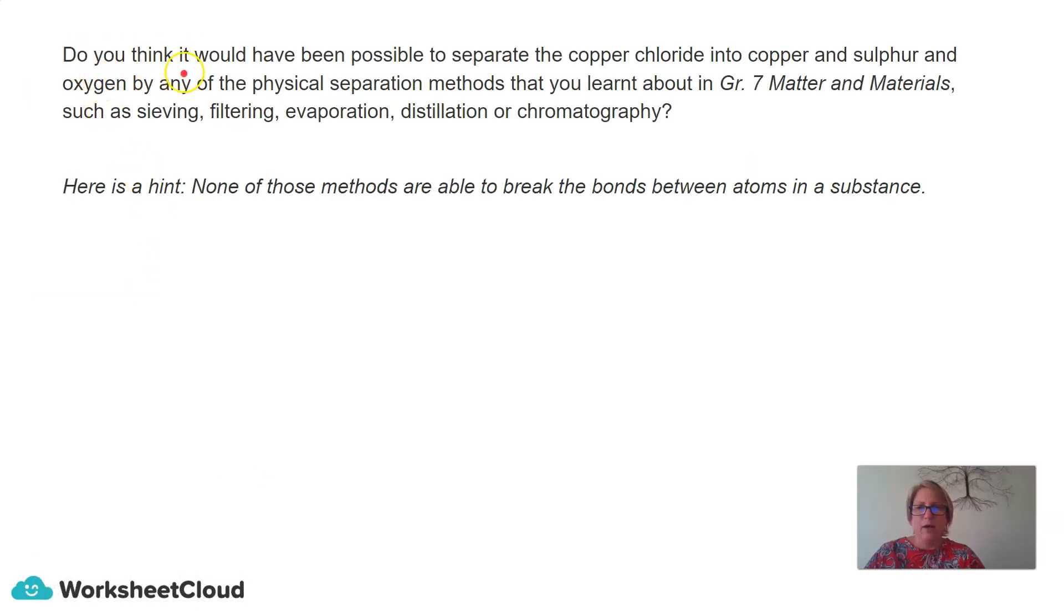Do you think it would have been possible to separate the copper sulfate into copper and sulfur and oxygen by any of the physical separation methods that you learned about in grade 7 matter and materials? So just to remind you, you would have looked at sieving, filtering, evaporation, distillation, or chromatography. So basically, here is a hint. None of those methods are able to break bonds between atoms in a substance. So our answer here is no.